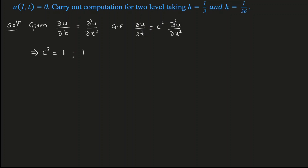From the given data, h = 1/3 and k = 1/36. And x lies between 0 and 1. The increment is given as h = 1/3, which is the increment of x. So the x values are: x₀ = 0, x₁ = x₀ + h = 1/3, x₂ = x₀ + 2h = 2/3, and x₃ = x₀ + 3h = 1.